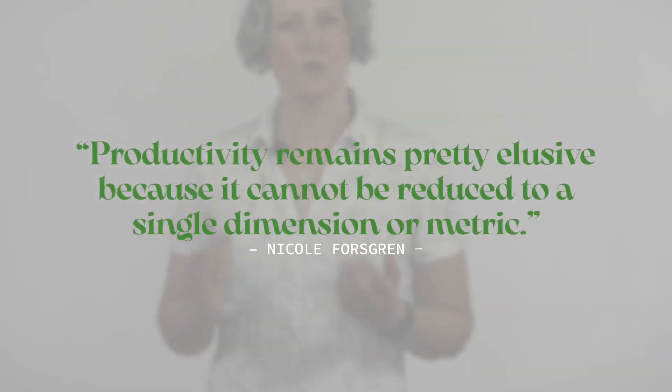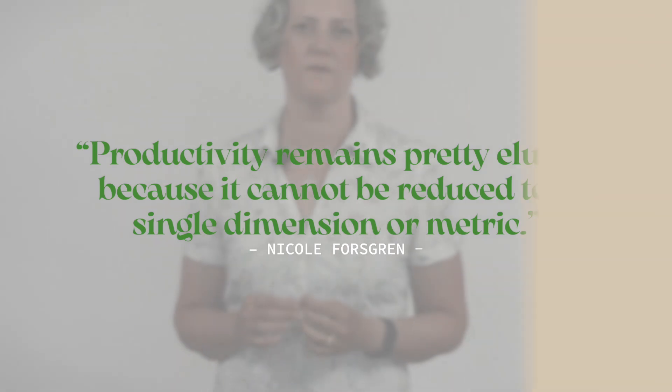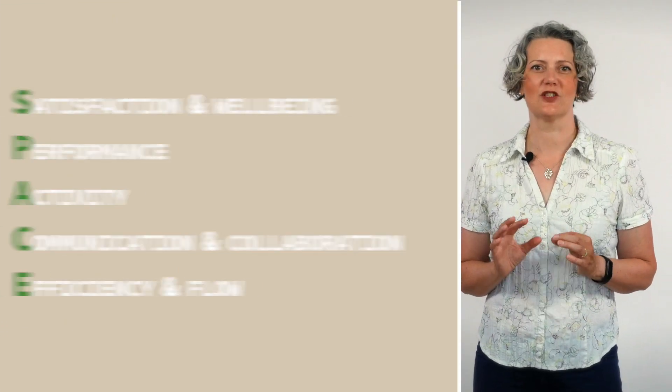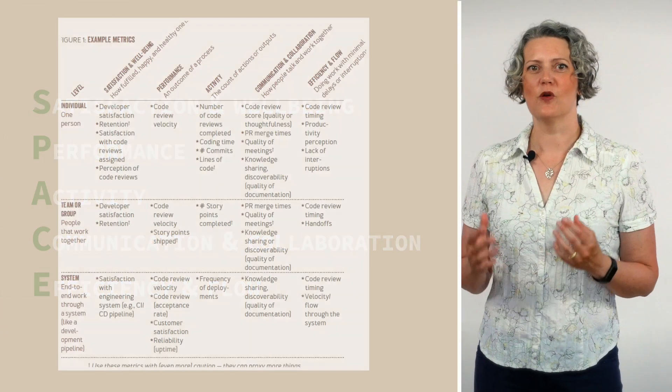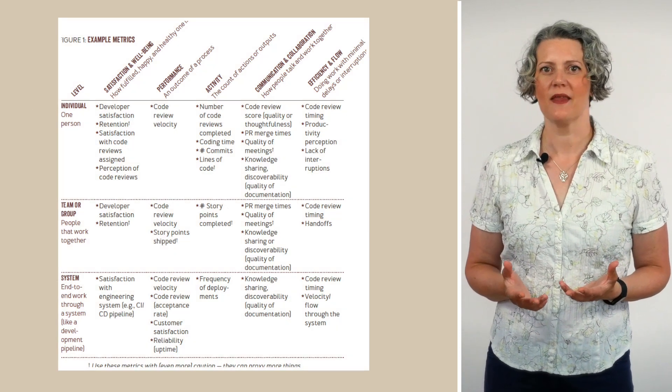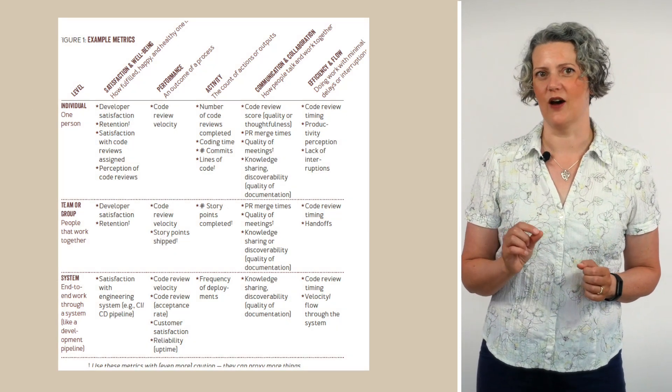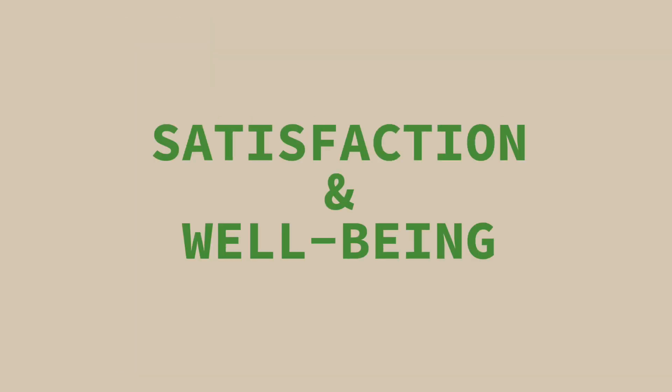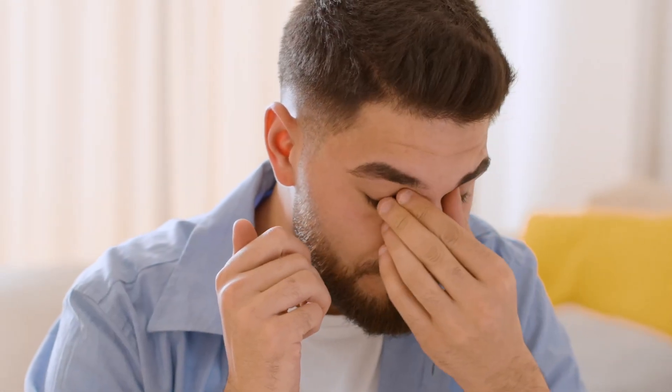I certainly agree with Nicole Forsgren when she says, productivity remains pretty elusive because it cannot be reduced to a single dimension or metric. Nicole is one of the people behind the new SPACE framework — an acronym for five dimensions which are relevant for productivity. I'm not going to describe all of them, but I will pick out the S: Satisfaction and wellbeing — developer happiness. This is relevant since developer wellbeing is at least correlated with productivity. That is, if you feel good about your job, the chances are you're productive. While if you feel like your job is going really badly and you hate the code, it's probably going badly.